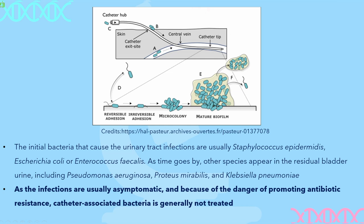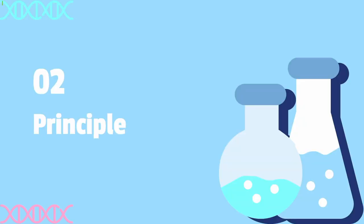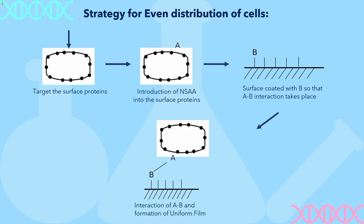Biofilms have been found to be involved in a wide variety of microbial infections of the body. This poses a problem as these biofilms get formed on medical devices like catheters, which is the main problem we're tackling in our project. As shown here, the infections are usually asymptomatic and because of the danger of promoting antibiotic resistance, catheter-associated bacteria is generally not addressable. Our strategy is to form an even layer of probiotic microbes, as these probiotic microbes are beneficial in inhibiting the pathogenic biofilms. Our main focus in the study is to form an even distribution of microbes in our biofilm — going from an uneven distribution to an even distribution.